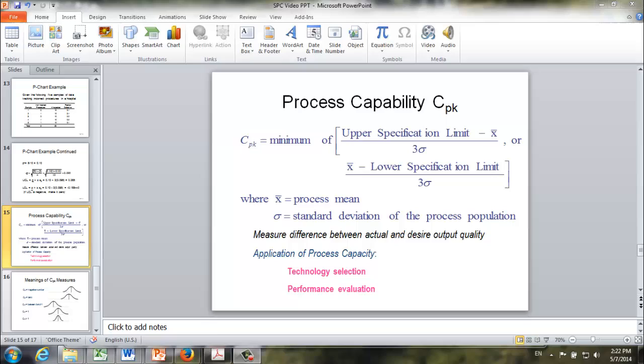There are different indices of process capability. One is Cp. The one I would like to discuss here is CpK. That is a more useful and popular one. The formula for calculating CpK is here. CpK is the minimum number between two values. One is the upper specification limit minus the sample mean divided by 3 sigma. The other value is x-bar minus lower specification limit divided by 3 sigma.